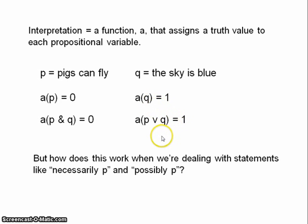But what about in modal logic? How do we introduce the notions of possibility and necessity into an interpretation? We use something called possible worlds semantics. The basic form of possible worlds semantics was proposed by Saul Kripke. Possible worlds semantics uses the notion of possible worlds — if you have no idea what possible worlds are, I suggest you check out my basic introduction video. The way we use possible worlds is this: first of all, we have what's called a model, and our model consists of three elements — W, R, and A.